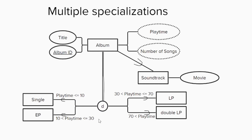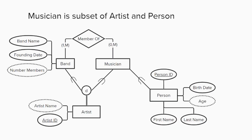It is also possible for one entity to be a subset of two or more supersets, which means that it is known as a shared subset and will inherit attributes from multiple superset entities.